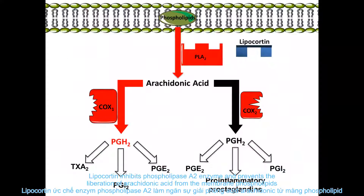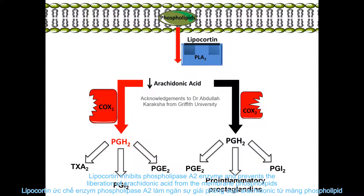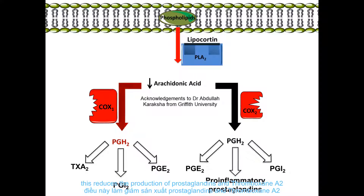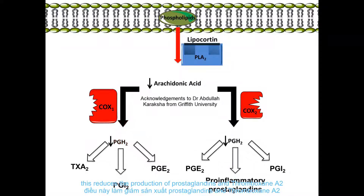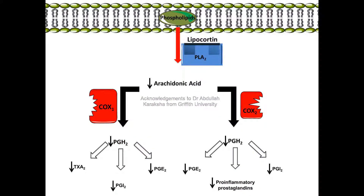Lipocortin inhibits phospholipase A2 enzyme and prevents the liberation of arachidonic acid from the membrane phospholipids. This reduces the production of prostaglandins and thromboxane A2.